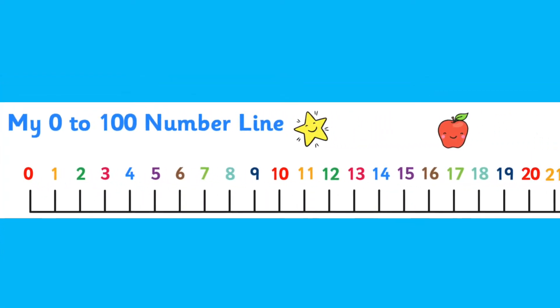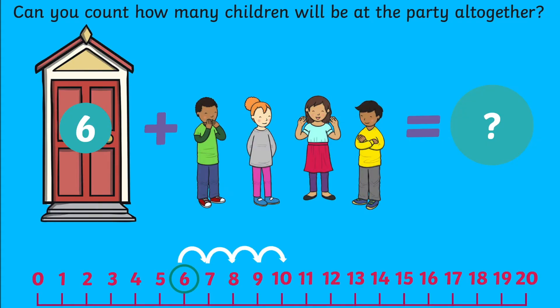A number line is introduced early in primary school for ordering numbers and often to support addition and subtraction in Key Stage 1.